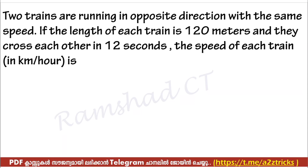There are two more questions. Two trains are running in opposite directions with the same speed. If the length of each train is 120 meters and they cross each other in 12 seconds, find the speed of each train in km per hour. When trains go in opposite direction, their speeds add.